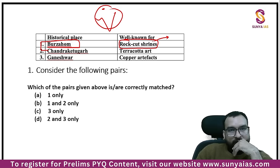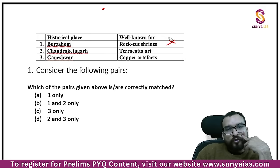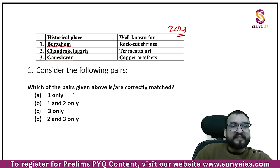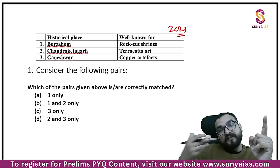Rock-cut shrines developed much later — so in a question, Burzahom with rock-cut shrines would be wrong. In the examination, when you know Burzahom is wrong, you can eliminate some options. If this question were in 2023 or 2024, the options would not be so simple — now options are also changing, so you should have fixed knowledge.